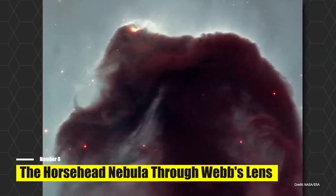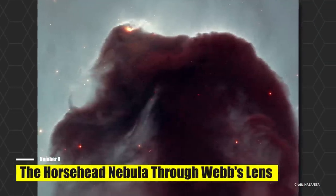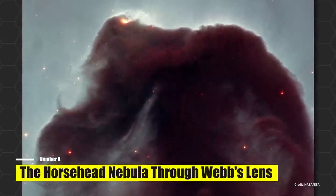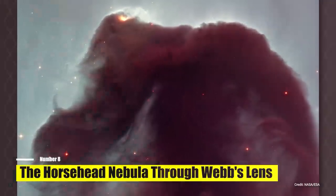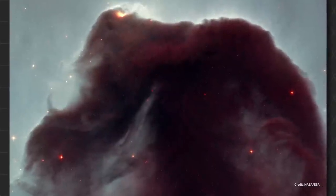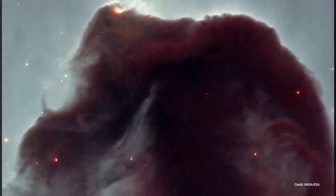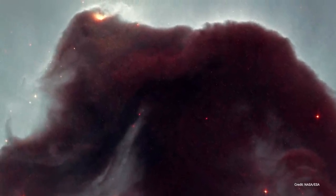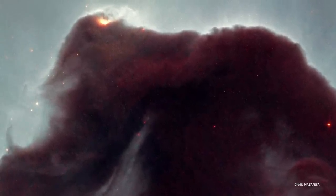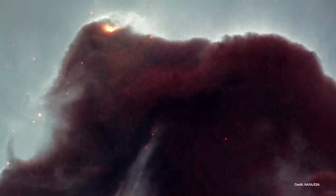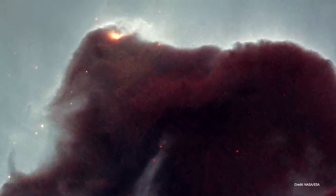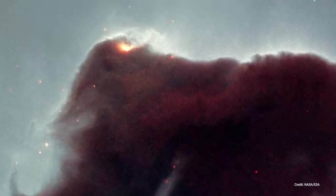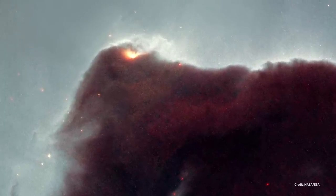Number 8. The Horsehead Nebula Through Webb's Lens. Emerging like a colossal celestial seahorse from a sea of dust and gas, the Horsehead Nebula is an enchanting sight in the constellation of Orion. This nebula is a chilly, dark cloud of gas and dust that stands out starkly against the surrounding stellar backdrop. The bright patch in the upper left corner is a fledgling star, still nestled within its gas and dust cradle. However, the radiation from this fiery youngster is slowly eating away at its birthplace. Meanwhile, a massive star, positioned outside of the Webb's field of view, is carving out the top of the Horsehead in a similar fashion.